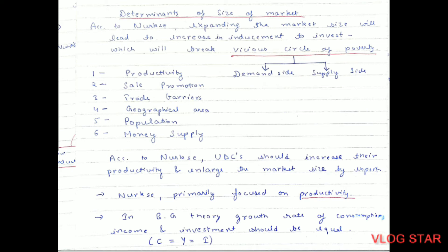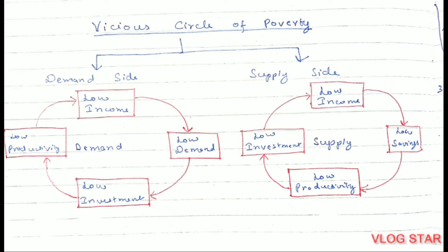According to Nurkse, underdeveloped countries should increase their productivity and enlarge the market size through exports. Nurkse primarily focused on productivity. In balanced growth theory, the growth rate of consumption, income, and investment should be equal, whereas in unbalanced growth theory these are not equal. According to Nurkse, the main reason for underdevelopment of underdeveloped countries is the vicious circle of poverty, and to develop these countries we must break it by expanding the market size.